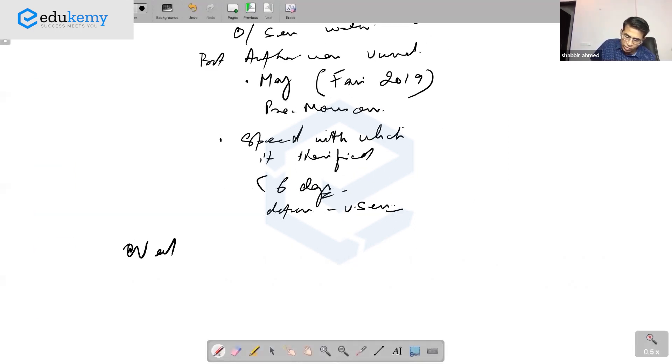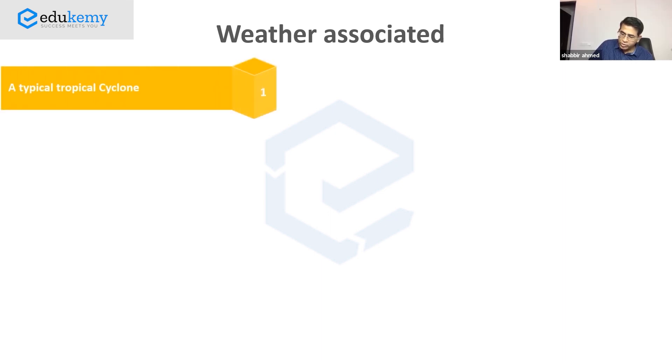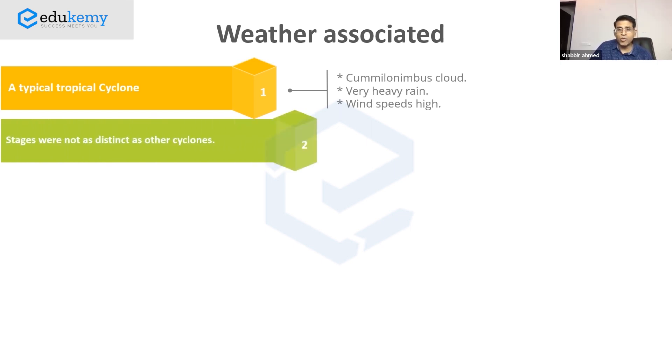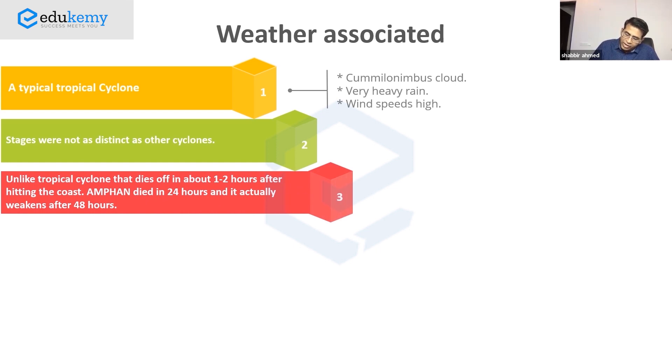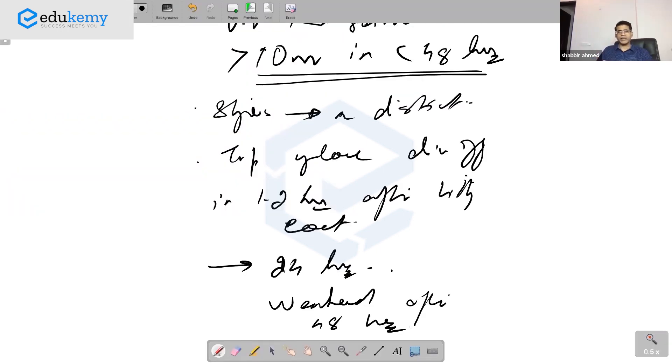Talk about the weather associated. A typical tropical cyclone has cumulonimbus clouds, very heavy rains - the rain was more than 10 centimeters in less than 48 hours, and high wind speeds. Mention how it changed weather patterns and the stages. One important point: unlike a tropical cyclone that dies off in about one to two hours after hitting the coast, it took almost 24 hours and actually weakened after 48 hours.